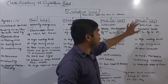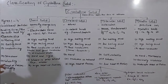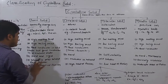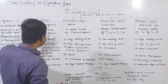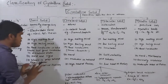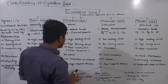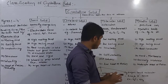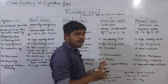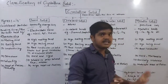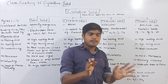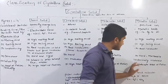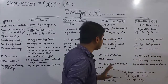The next characteristic is solubility. The ionic solid is soluble in polar solvents like water. In the crystalline structure, water dissolves the ionic solid. But the covalent solid structure is insoluble. The molecular solid is soluble, but the metallic solid is generally insoluble.